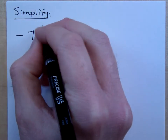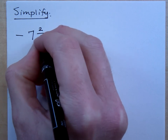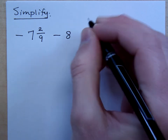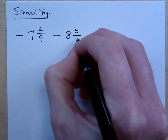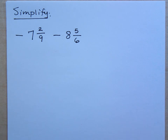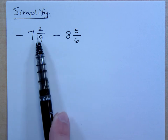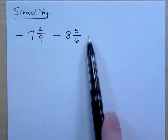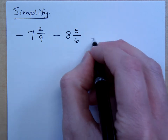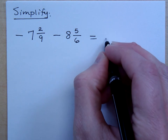If I have negative 7 and 2 ninths minus 8 and 5 sixths, what will you do here? Well, let's look at this. Is this a subtraction problem? I have a negative and a negative, right? So I'm asking you to combine a negative 7 and 2 ninths with a negative 8 and 5 sixths. In essence, I'm actually adding these guys and I'm going to get a larger negative number, right?